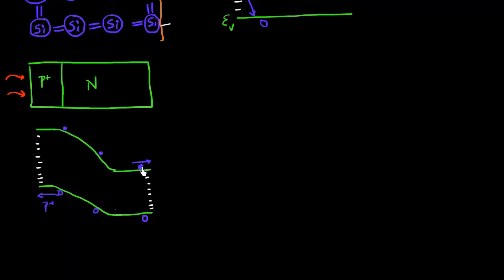When these electrons reach close to this N-type contact, what they see is a large number of surface states present over here. So instead of getting collected, they can essentially use this surface state as a trap center and recombine with the hole present in the valence band. Similarly, this hole in the valence band or this electron in the conduction band — they can also recombine using these surface states. So instead of getting collected, this electron and hole pair are just annihilated due to this recombination happening due to these surface states. So it's very important to reduce the density of these surface states.